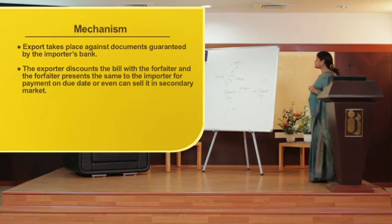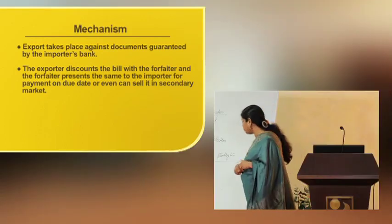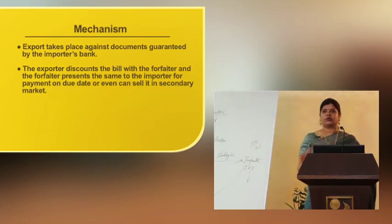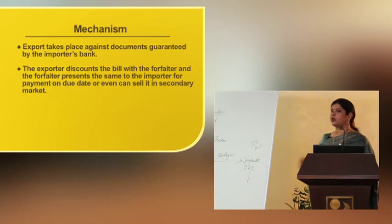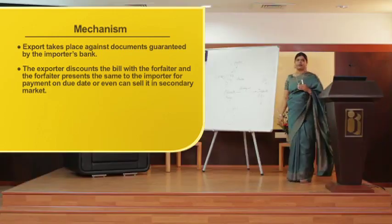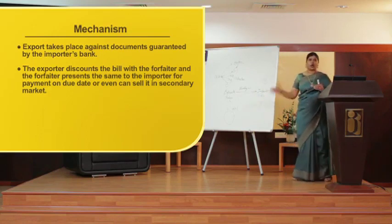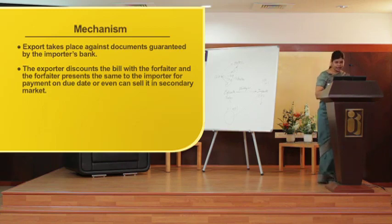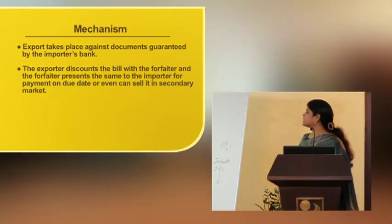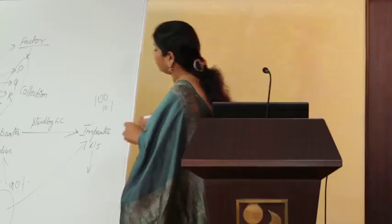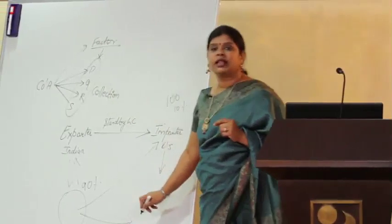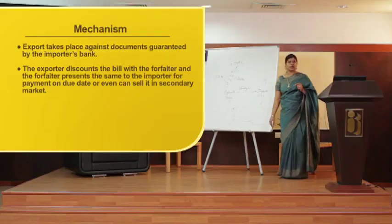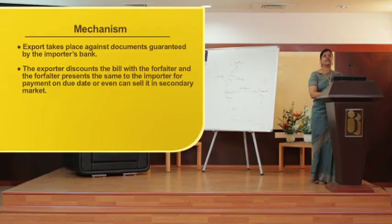The exporter then discounts the bills with the forfeiter, and the forfeiter presents the same to the importer for payment on the due date. So the exporter is no longer in the picture — the exporter gets his discounted price and receives his money. On the due date, the forfeiter approaches the importer and gets the money back. The forfeiter can also sell those dues in the secondary market if they are in urgent need of funds, so that flexibility is also available.